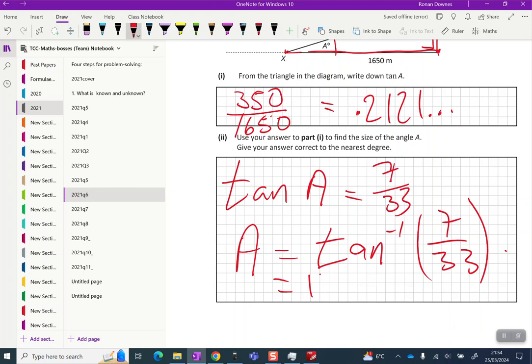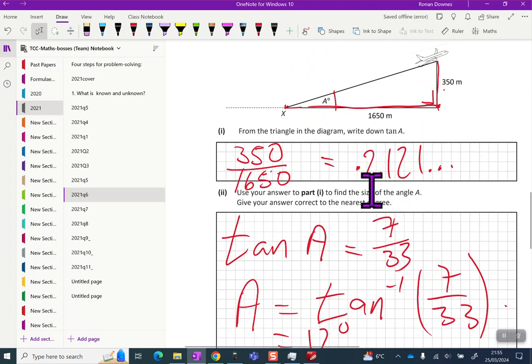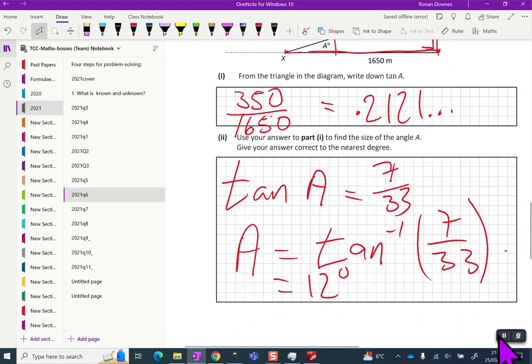They do say correct to the nearest degree, so we can write down 12 degrees. Just double check: keep your answer important and give your answer correct to the nearest degree. So we've answered the question, we can move on. As always students, I will see you in the next one.